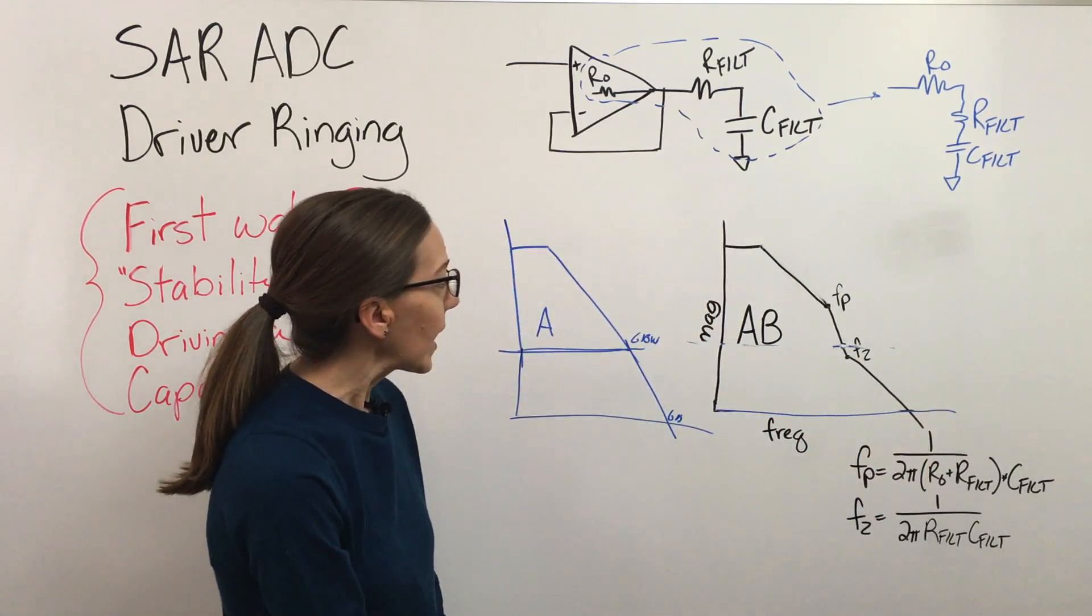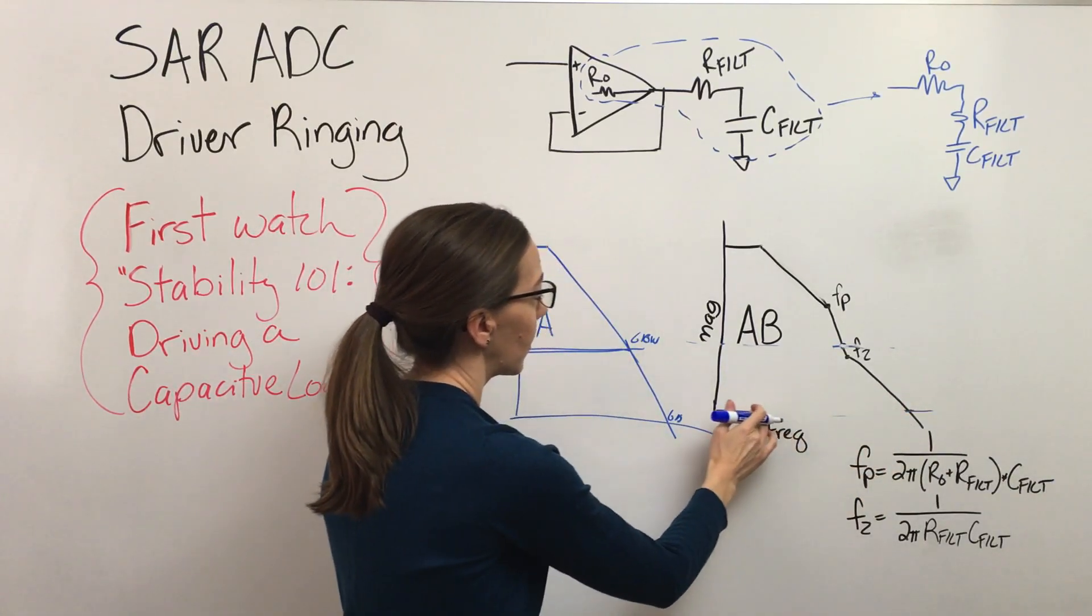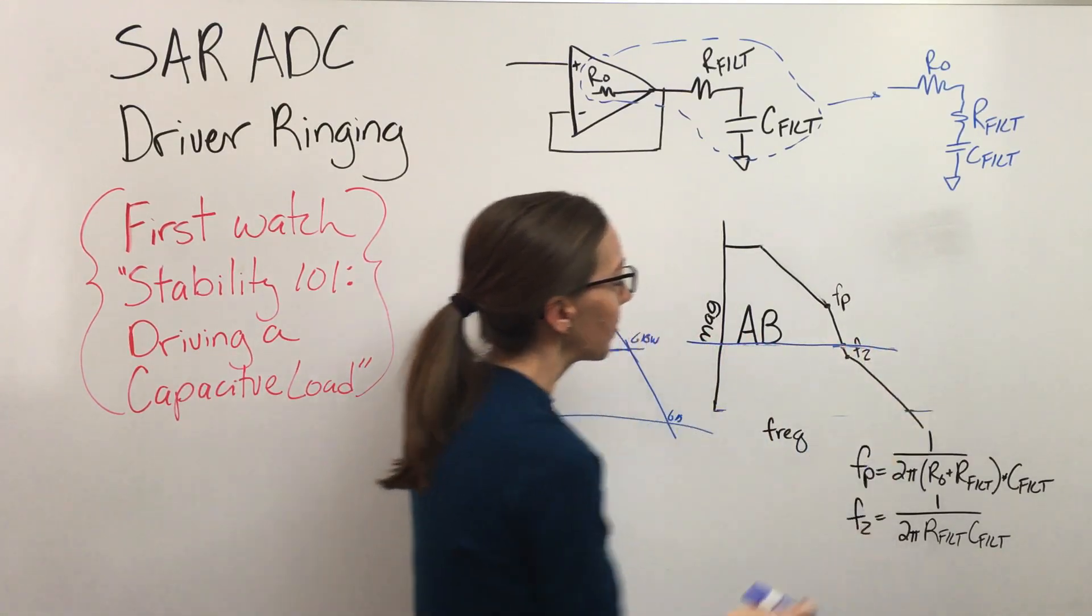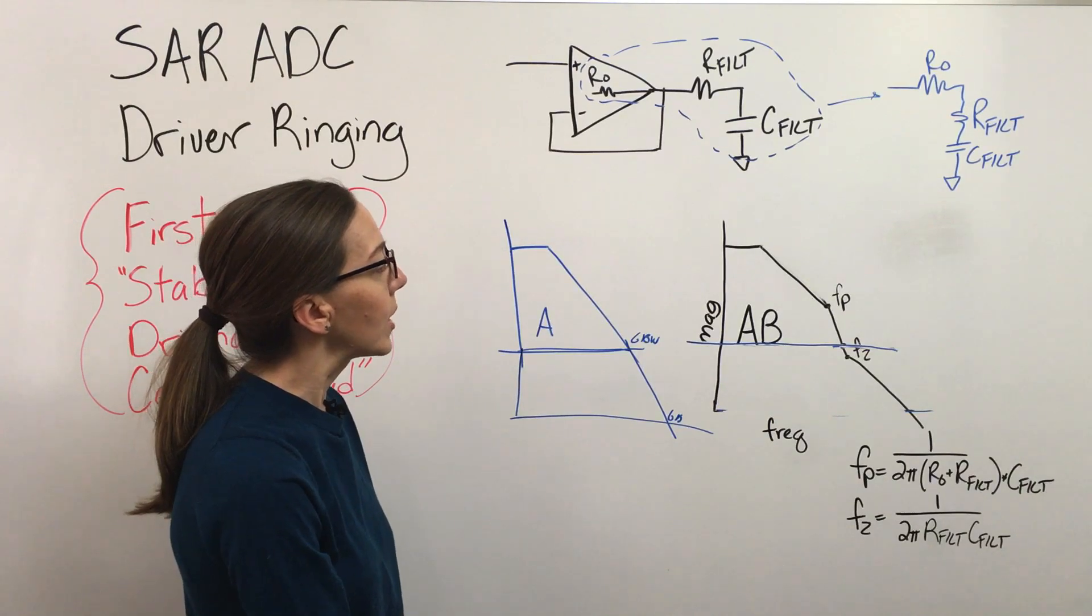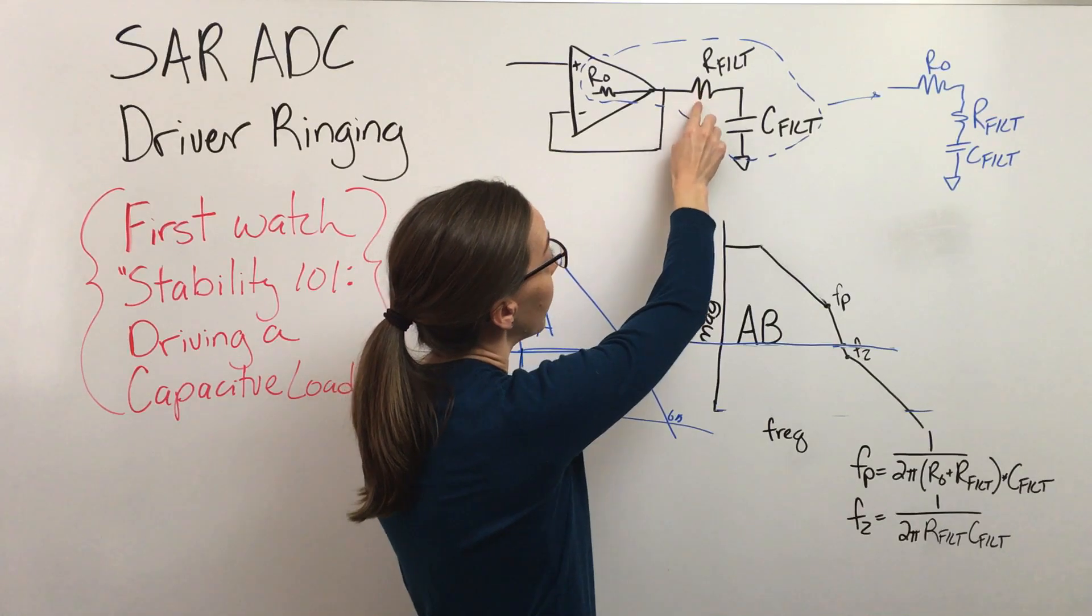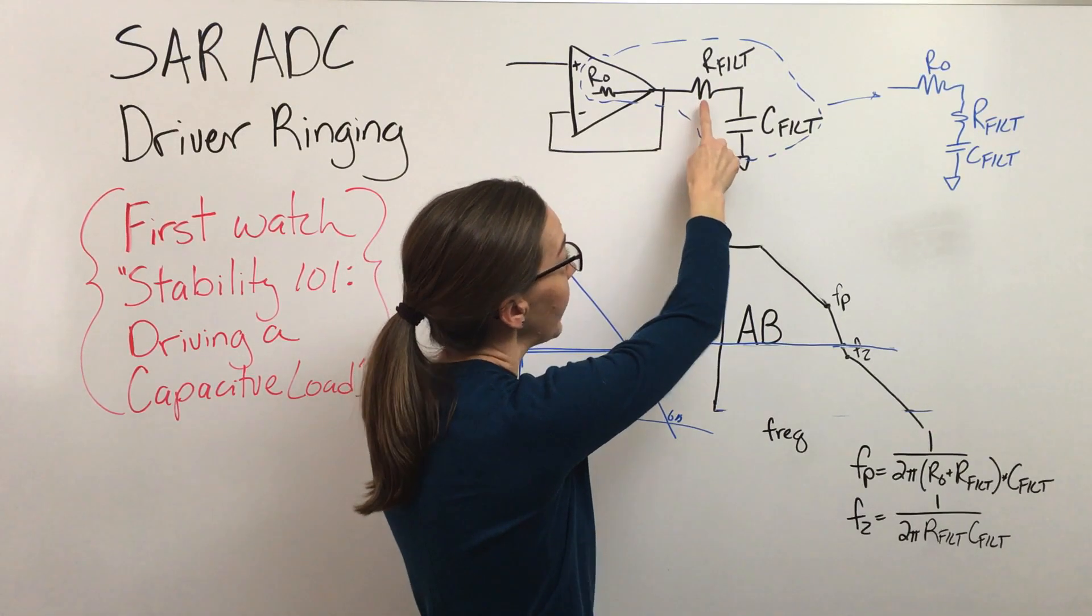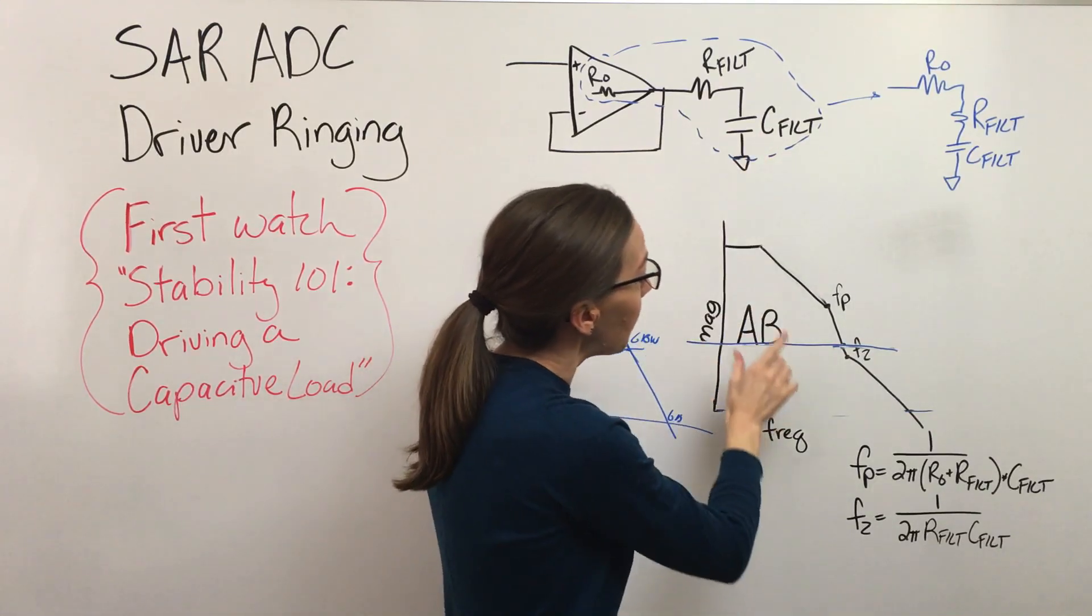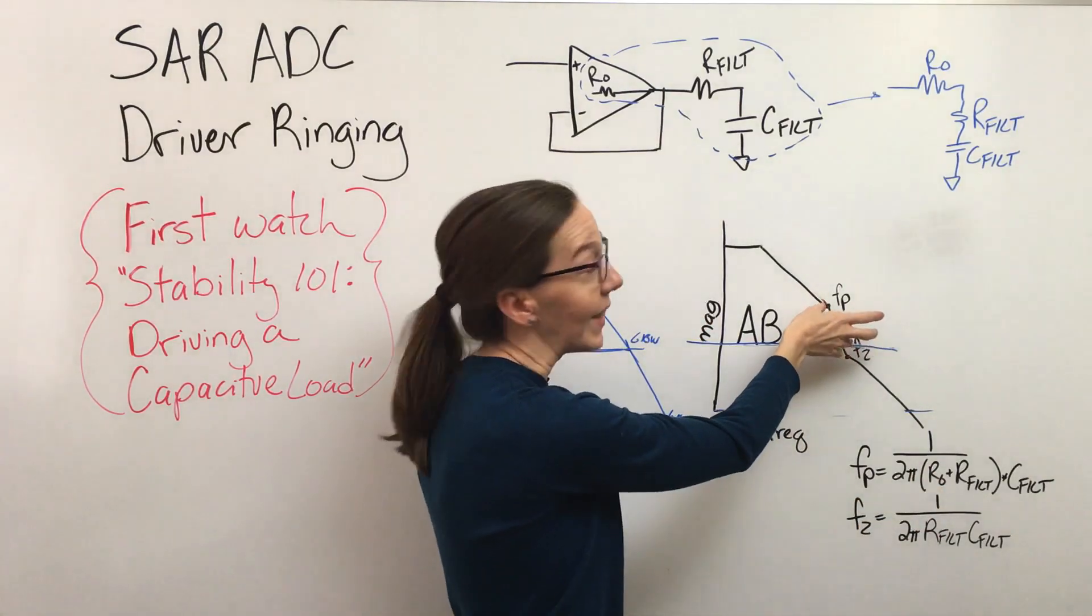Another thing is if you've selected a part that looks more like this, something you can do depending on your situation is you can try to increase this resistor value. So if you increase the value of this resistor and then to keep the same bandwidth you'd want to reduce the size of this capacitor, but if you do that what you end up doing is you pull your pole and your zero together.